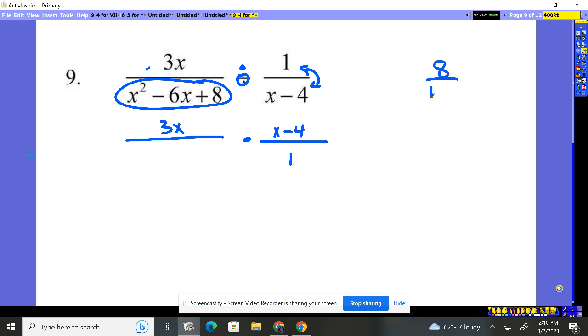So what multiplies together? Give me eight, one and eight, two and four. Now it's a positive eight, so either both are positive or both are negative. I know they're both negative because when I put them together, I need a negative six. So that tells me it's the negative two and negative four. So this breaks down to an x minus two and x minus four.